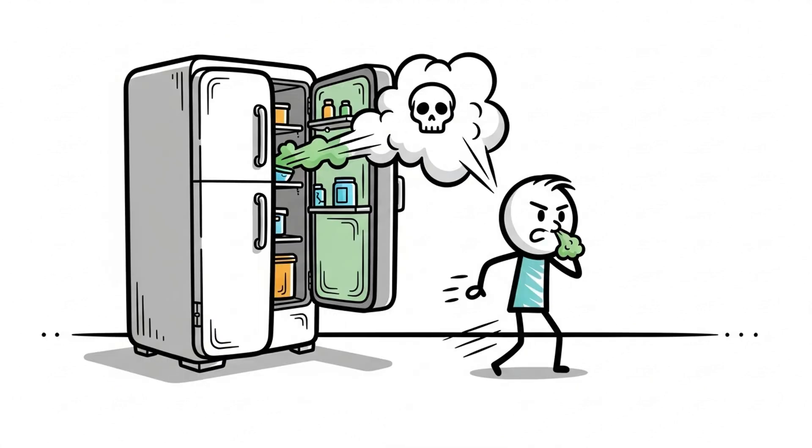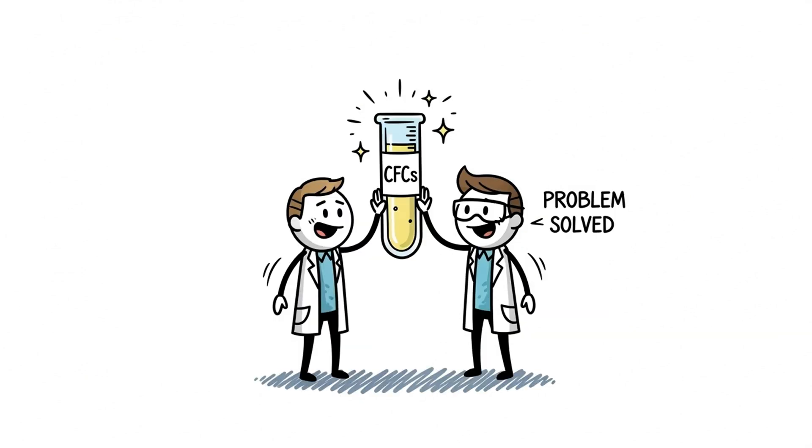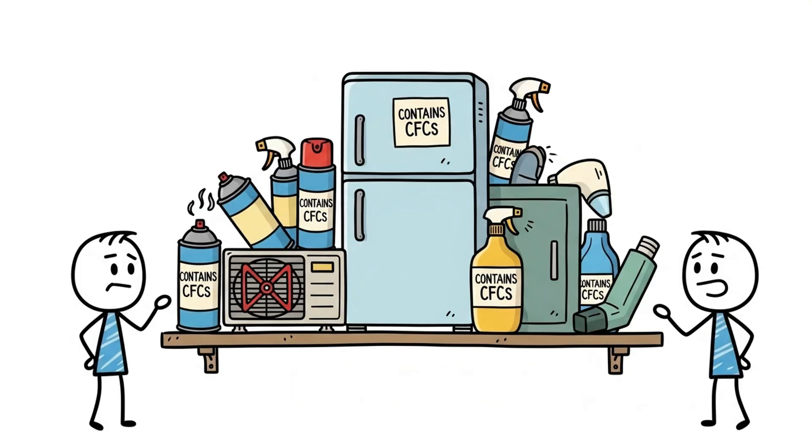In the 1920s, refrigerators were dangerous. They leaked toxic gases like ammonia and methyl chloride. To solve this, chemists invented something new: chlorofluorocarbons, CFCs. They were non-toxic, non-flammable, and seemed like a miracle. Soon, CFCs were everywhere, in fridges, air conditioners, hairspray, even asthma inhalers.